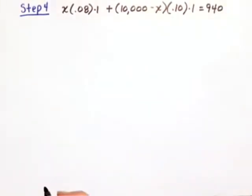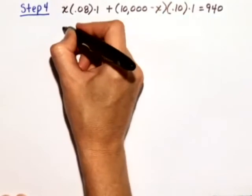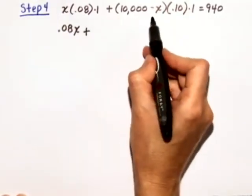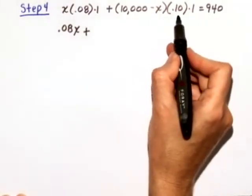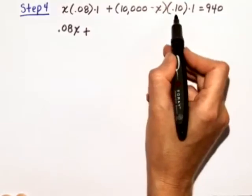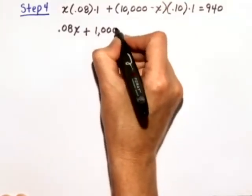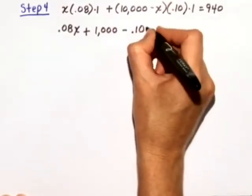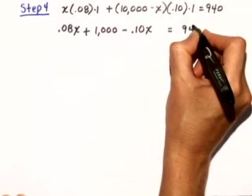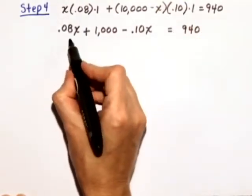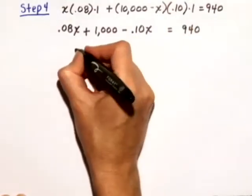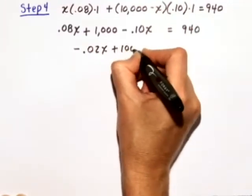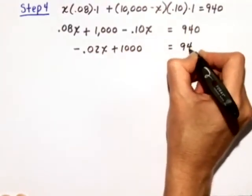So we need to distribute. X times .08 times 1 is simply .08x, plus we have 10,000 minus x times .10 times 1. So 10,000 times .10 is just 1,000, minus x times .10 times 1 is .10x, and that's equal to 940. We'll combine like terms, so .08x minus .10x plus 1,000 is equal to 940.